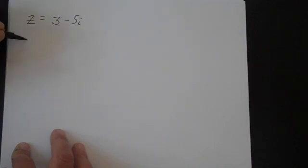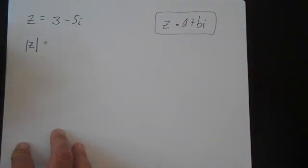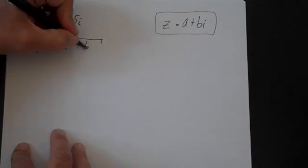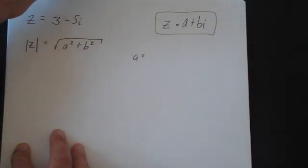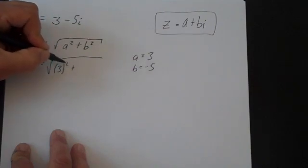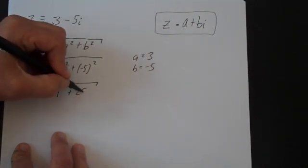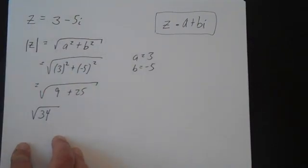Let's do one more quick example with some notation. Let z equal 3 minus 5i, and you want to find the absolute value of z. Using the notation z equals a plus bi, the absolute value of z is simply the square root of a squared plus b squared. Here a is 3 and b is minus 5, so that's the square root of 3 squared plus negative 5 squared, which is the square root of 9 plus 25, or the square root of 34. And that's how you find the absolute value of a complex number.